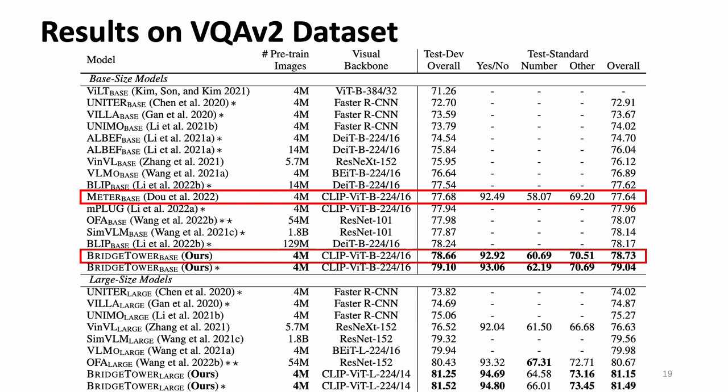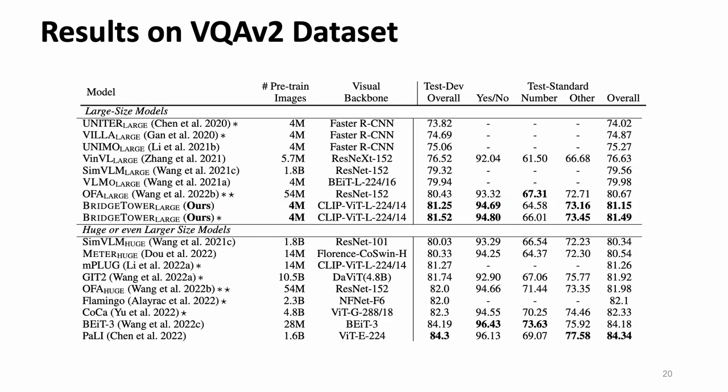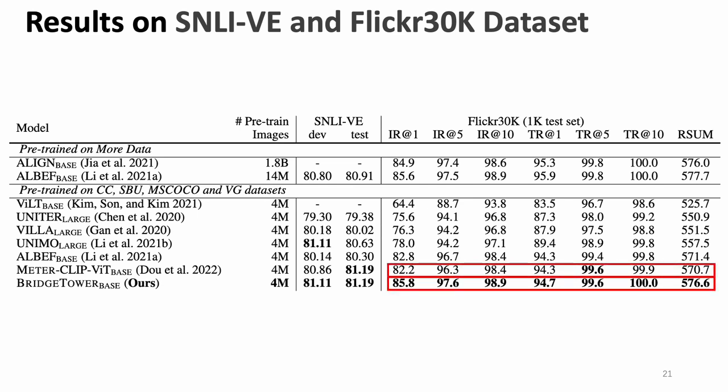Remarkably, Bridge Tower outperforms previous models trained with 10x or even 100x more images, not only in the base size but also in the large size. With only 4 million images for pre-training, Bridge Tower large size achieves 81.15 on the VQAv2 test-standard set, which beats many strong baselines pre-trained with more data and parameters. A similar trend also occurs in the visual entailment and image-text retrieval tasks, especially on the Flickr30K dataset, where Bridge Tower base size brings 5.9 gains.